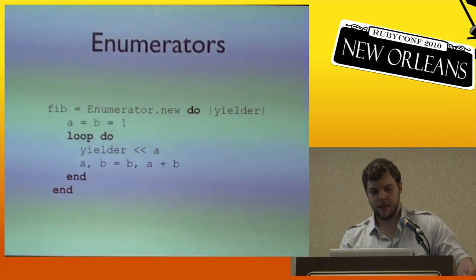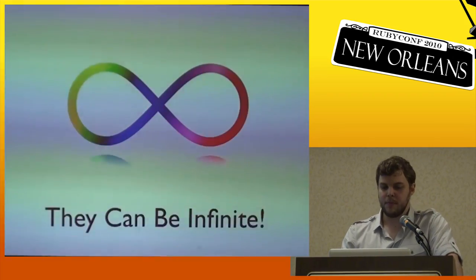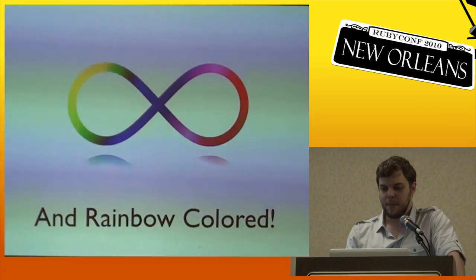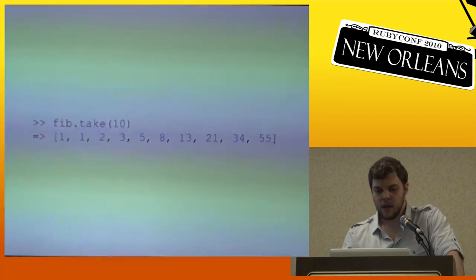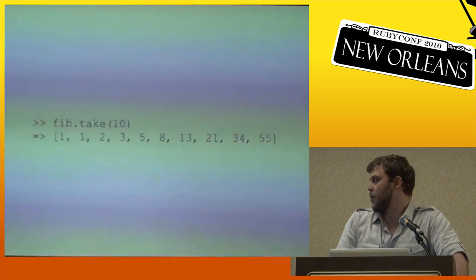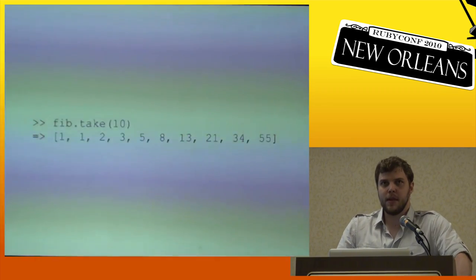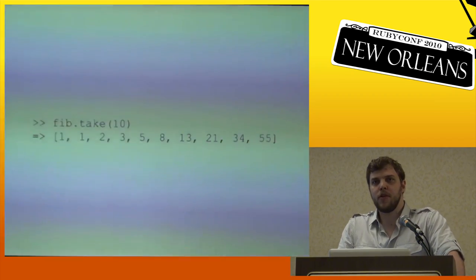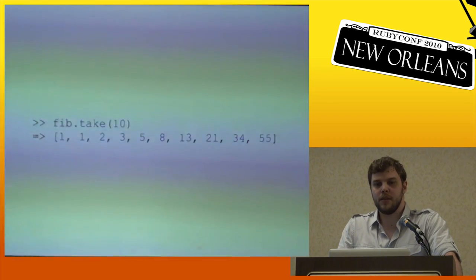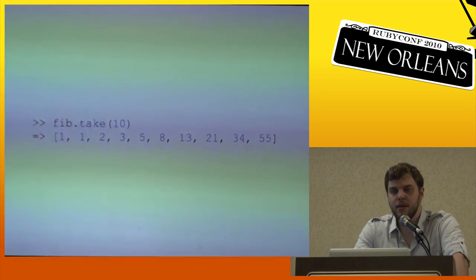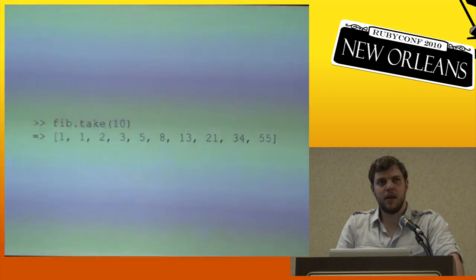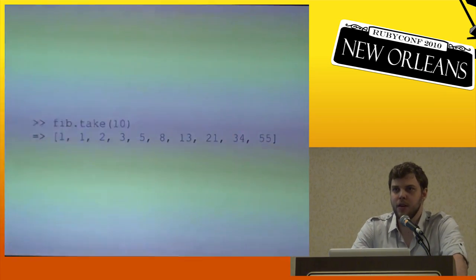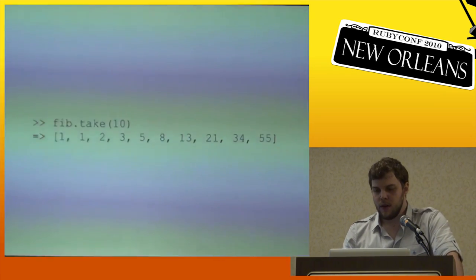You can say each on an enumerator and have it behave as internal iteration, but you can also say next and have it behave as an external iterator. Enumerators can be infinite lists. You can take this Fibonacci sequence and call take to get the first ten values. This makes enumerators similar to functional programming methods on lists — you can do things similar to Haskell's infinite lists with take. Although calling each on an infinite enumerator might keep you there for a while.